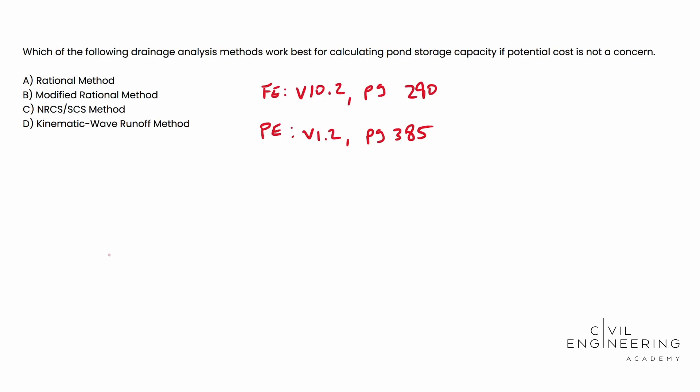Now, if you use the modified rational, your modified rational, you can use that as well. But only in times where you're limited in space, you're limited with money, that type of stuff. But it's going to end up being 10% larger than a typical rational method pond. So that'll give you a little bit better of an idea.